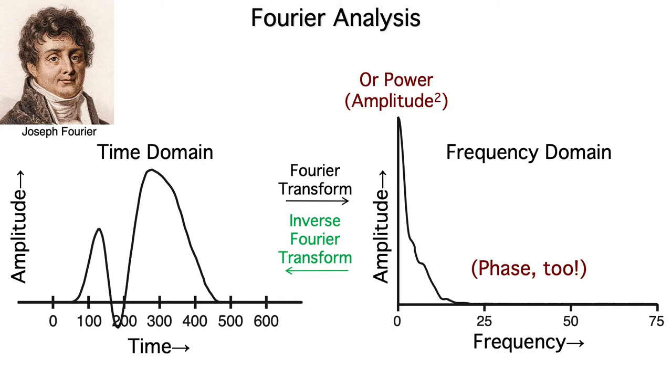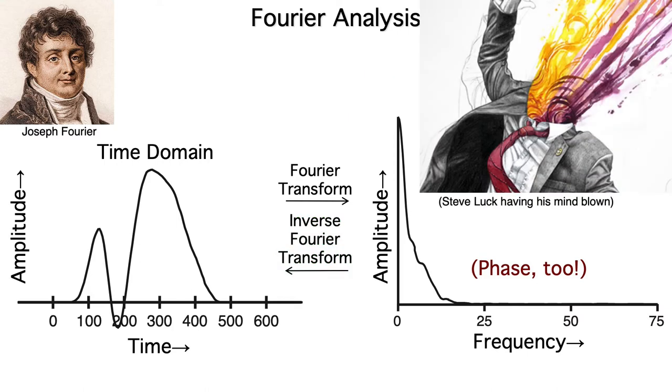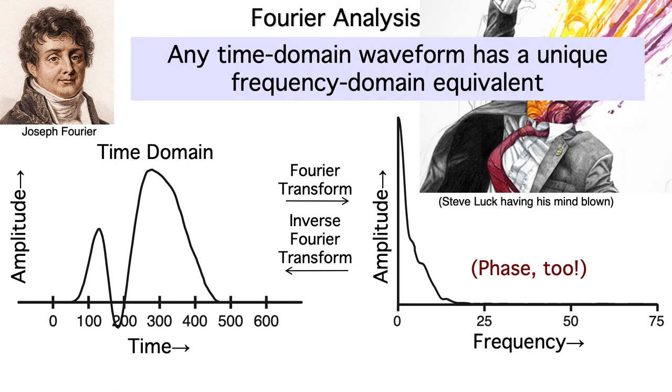There's also an inverse Fourier transform. That just sums together the sinusoids shown in the frequency domain plot to recreate the original ERP waveform. I think this is pretty amazing. For any time domain waveform, no matter how complex, we can use the Fourier transform to come up with a set of sinusoids that could be summed together to recreate the original waveform. And there's a unique solution. There's one and only one set of sinusoids that can perfectly recreate the original waveform.